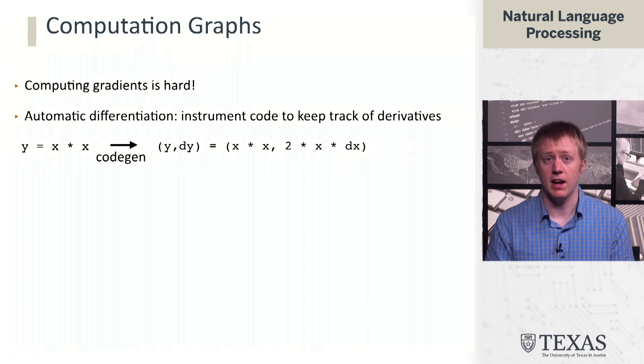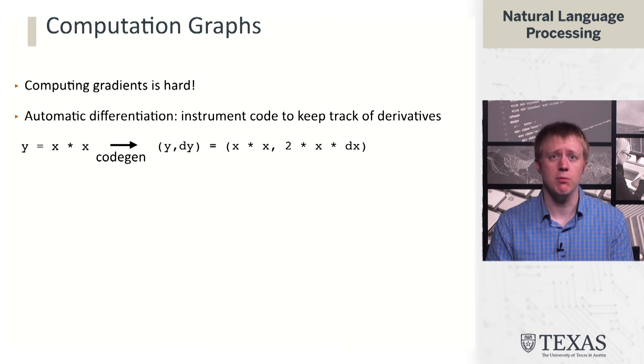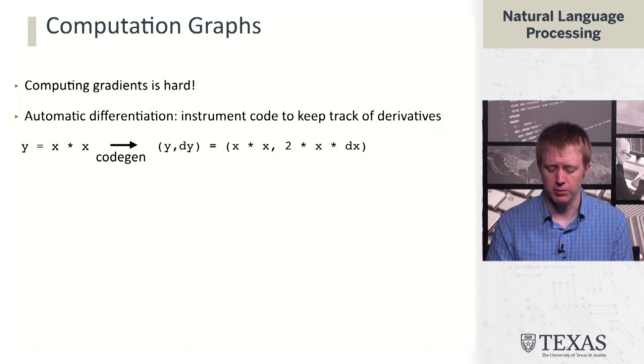Roughly you can think about this as follows: if I write y equals x times x, then a compiler should be able to look at that multiplication operation and generate code which keeps track of this dy term, which tracks the derivatives as well. And of course, y is going to capture x times x as before.